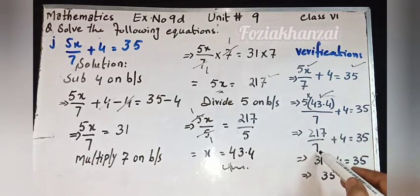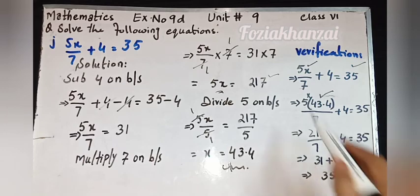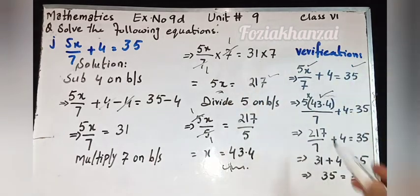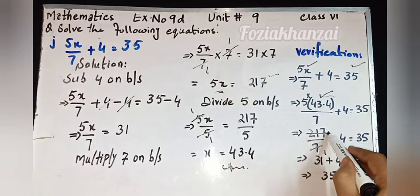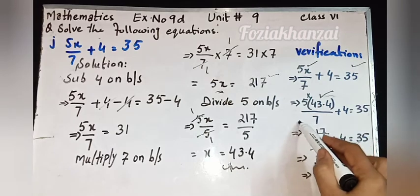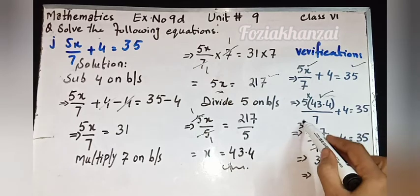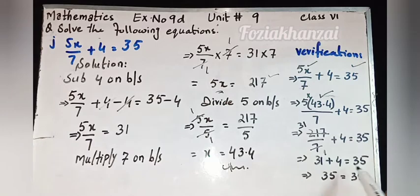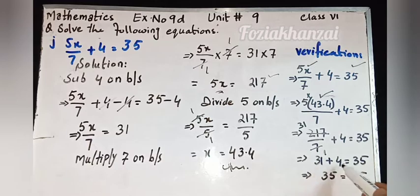5 multiplied by 43.4 gives 217. Remaining as it is: 217 divided by 7 gives 31. Then 31 plus 4 is equal to 35, which equals 35. Both sides give the same answer — verification of Part J is done.